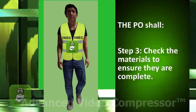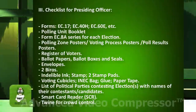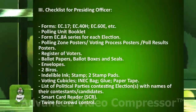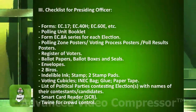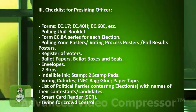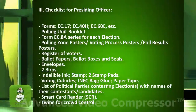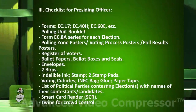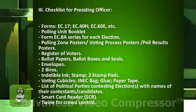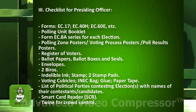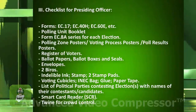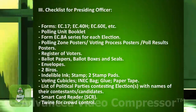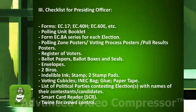Step 3: Check the materials to ensure they are complete. Checklist for presiding officer includes: Forms EC-17, EC-40H, EC-60E, etc.; Polling Unit Booklet; Form EC-8A Series for each election; Polling Zone Posters, Voting Process Posters, and Poll Results Posters; Register of Voters; Ballot Papers; Ballot Boxes and Seals; Envelopes; Two Biros; Indelible Ink; Stamp; Two Stamp Pads; Voting Cubicles; Eye-neck Bag; Glue; Paper Tape; List of political parties contesting elections with names of their candidates; Smart Card Reader (SCR); and twine for crowd control.